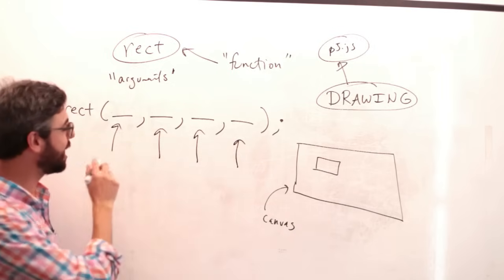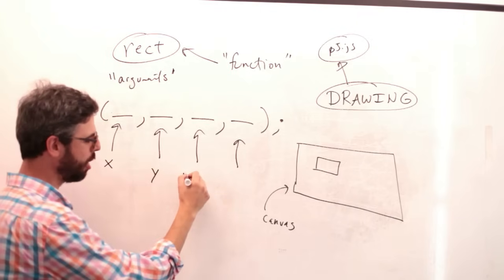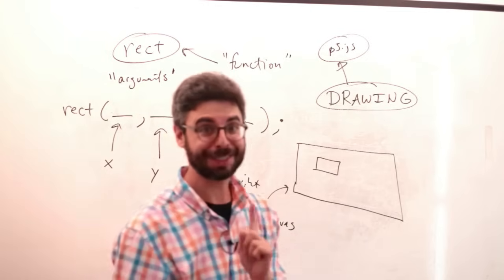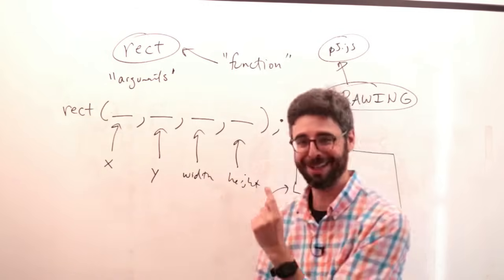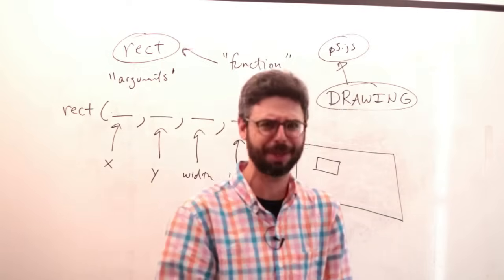Now what goes in these blank spots? So here are the things that go there. An x location, a y location, a width, and a height. So this brings up a key point. What do I mean by x location, y location?